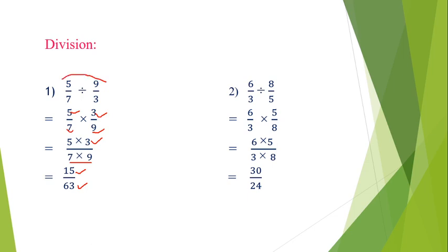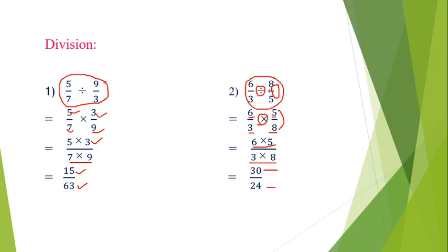Second division example: 6 upon 3 divided by 8 upon 5. Convert the division sign to multiplication and flip the right-side fraction: 8 upon 5 becomes 5 upon 8. So we have 6 upon 3 multiplied by 5 upon 8. Numerator: 6×5 = 30. Denominator: 3×8 = 24. The final answer is 30 upon 24.